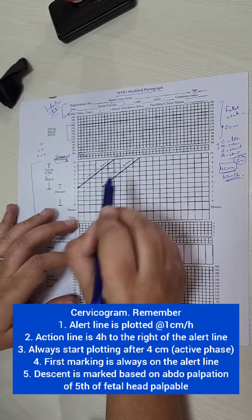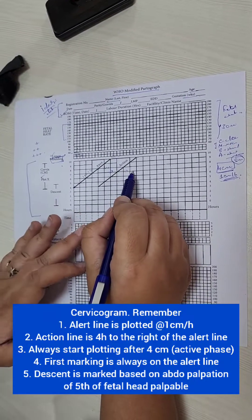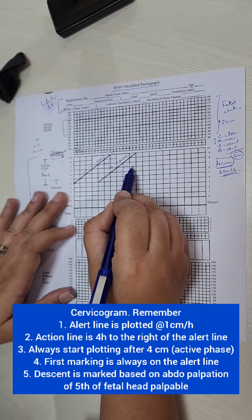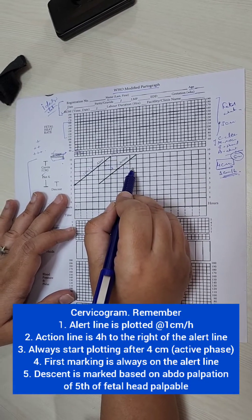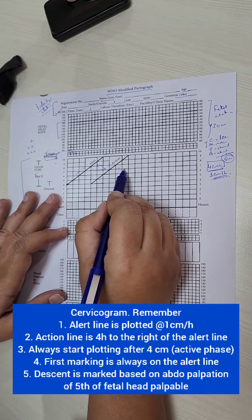But once the line crosses the action line, we have to take action. That means that labor is now so prolonged that we need to deliver her urgently. Find out the cause and deliver her as soon as possible.